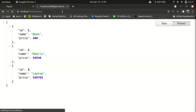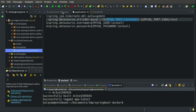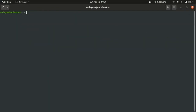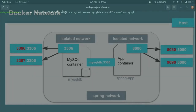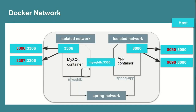Hello everyone. In the last video I showed you how to containerize a Spring Boot application and MySQL server using Docker commands. I also showed you how to create Docker volumes and Docker networks, how to persist data in our host machine directory, and how to communicate between Docker containers using Docker network concepts. In this video I'm going to show you all those things using Docker Compose.